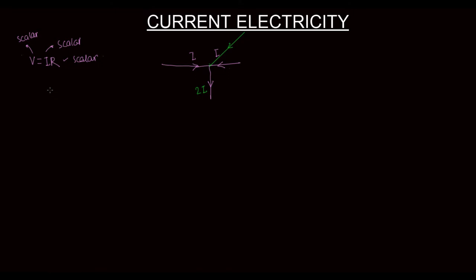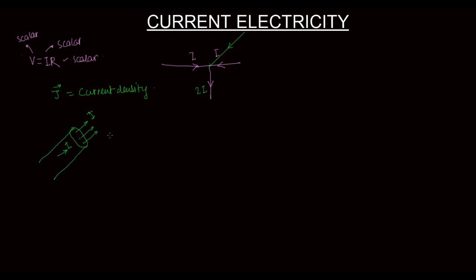However, we do define something related to current as a vector, and that is J. J is defined as the current density — that is, current per unit area. So if this is the cross-section of a conductor carrying a total current I, then we define a vector J.